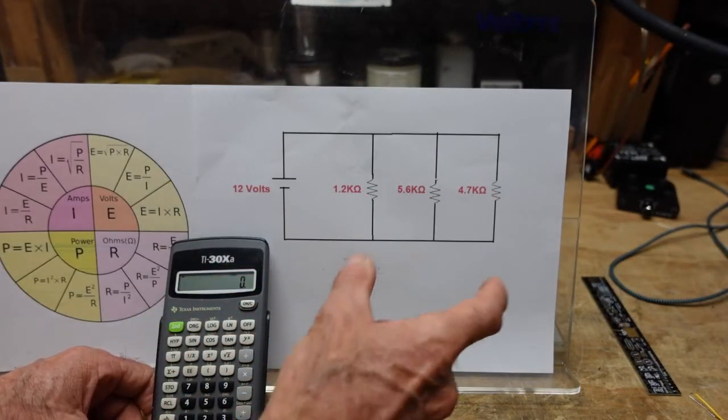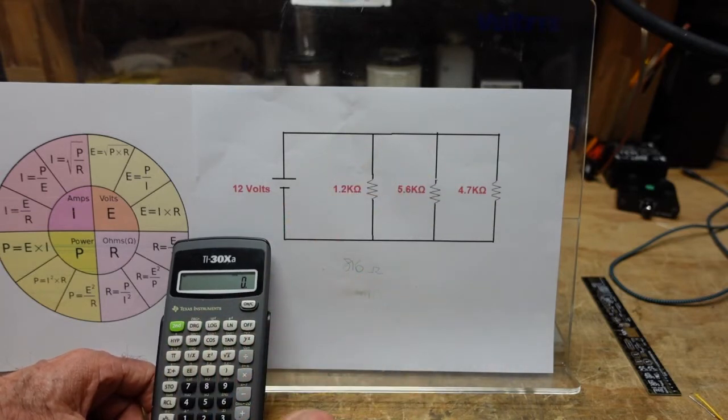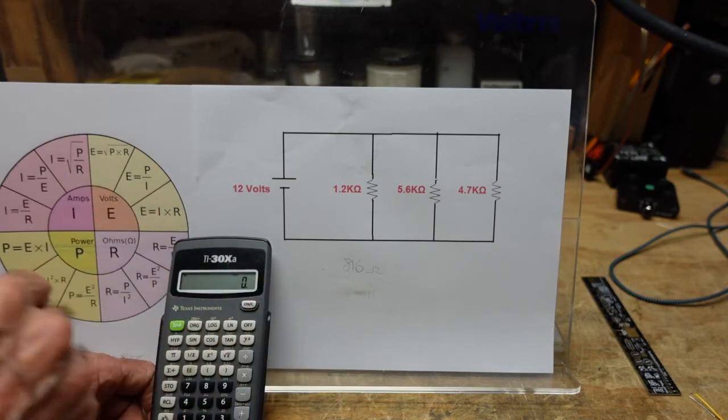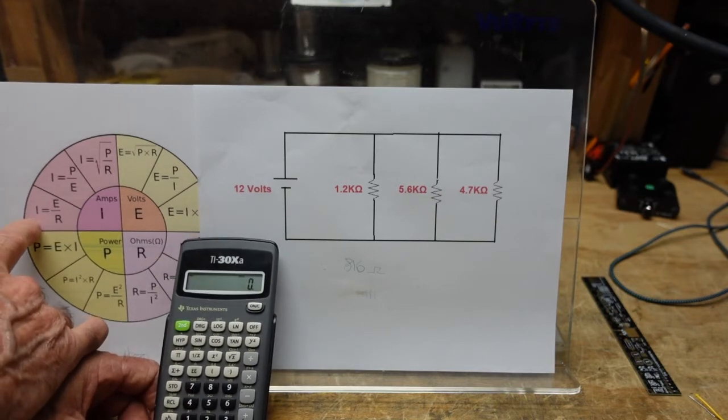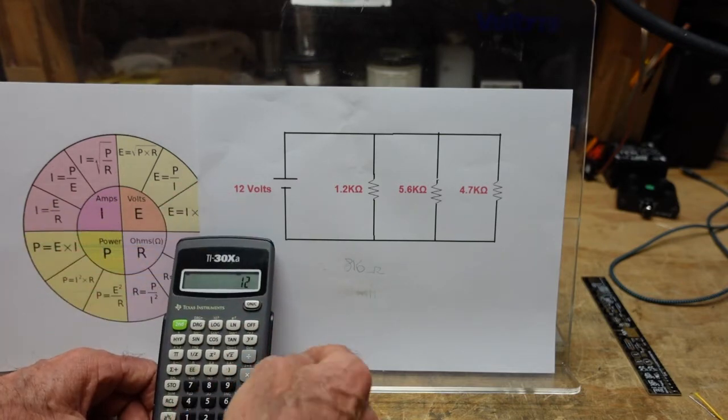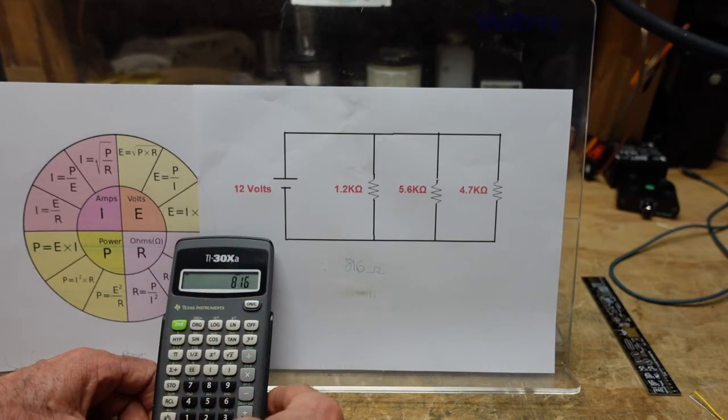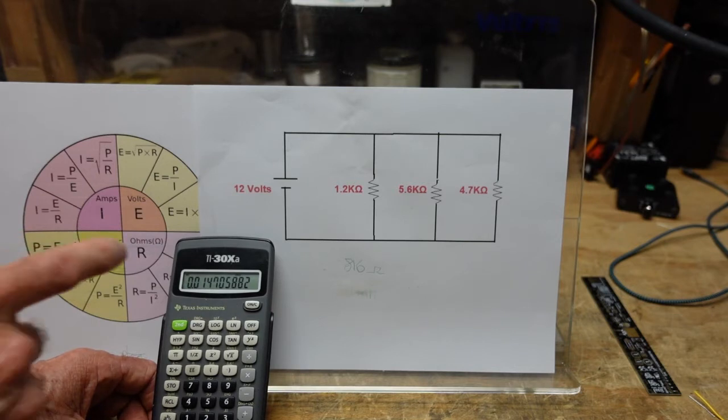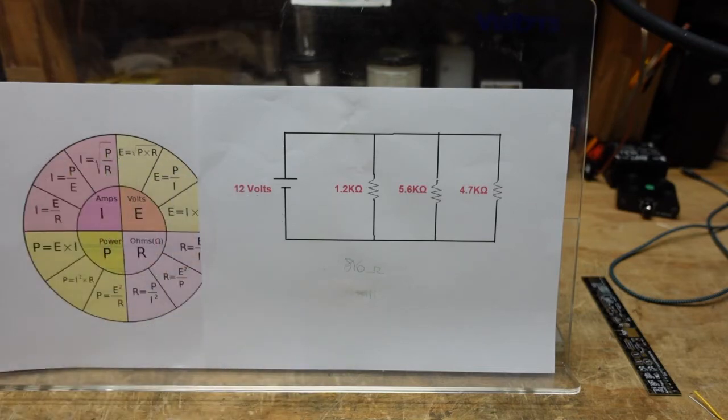We know now that the total of our paralleled resistance has come out to 816 ohms. To figure out what the total current through the circuit is we do the same formula we did before, which is I = E/R. We know that E is 12 volts and we know that R is 816 ohms, and that yields us a total current of 0.0147 amps or 14.7 milliamps. This is going to be our total current, so that is 14.7 milliamps.